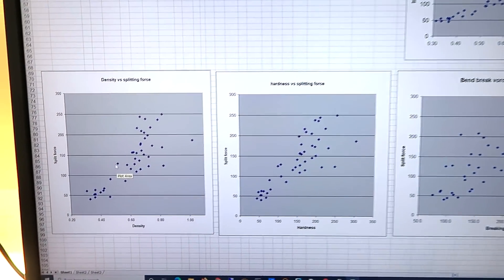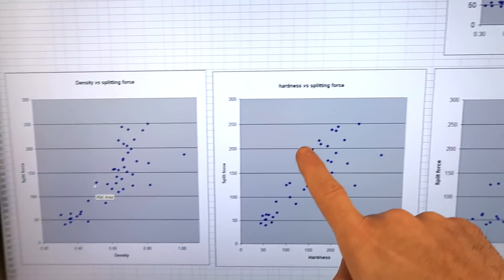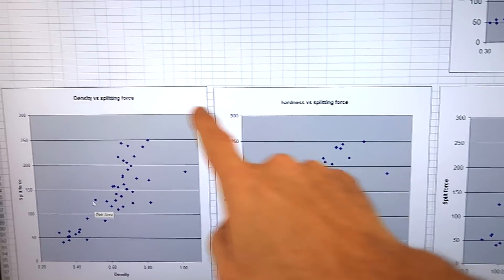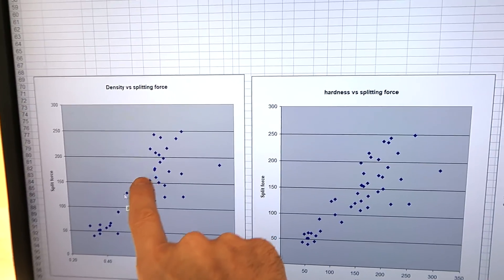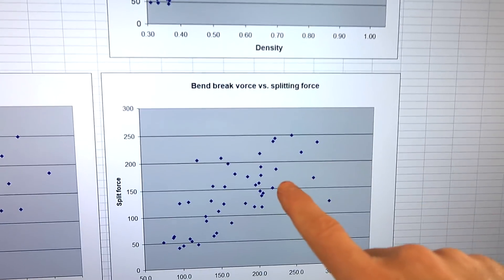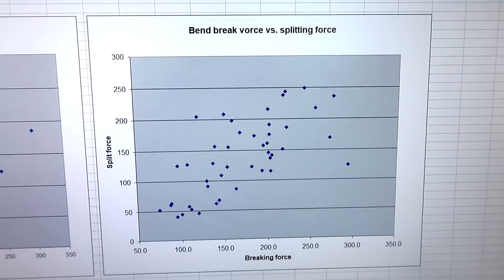And doing some scatter plots of my data here I've got density versus split force and you can see it correlates a bit, same with hardness but the hardness and density actually those correlate super well so those are almost the same graph. Interestingly enough the bending breaking force versus the splitting force that correlation is rather poor which is kind of interesting because you think of a wood as being strong or weak but being strong along the grain doesn't necessarily mean it's strong across the grain and depending on what you're building that may be a big factor.